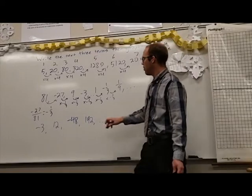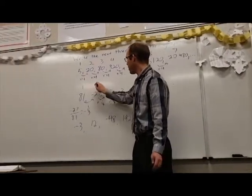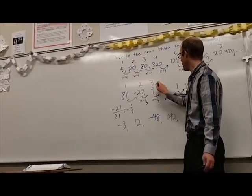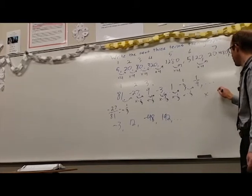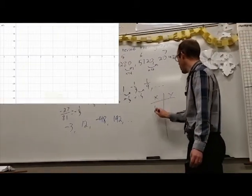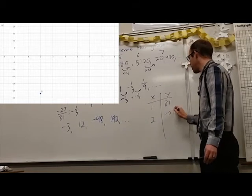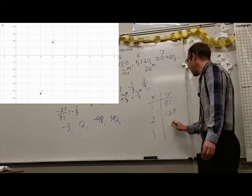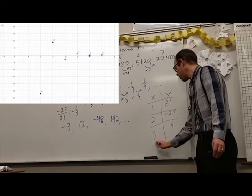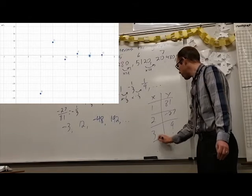Now again we could write this as ordered pairs. So here's our x values: 1, 2, 3, and so forth. So we've got 1 and 81, 2 and negative 27, 3 and 9, and we'll keep going until we've got all the numbers that we want to graph.